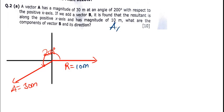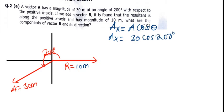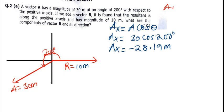To find the x component of A, we use Ax = A cos θ. So Ax = 30 cos 200°. Calculating that gives us negative 28.19 meters.